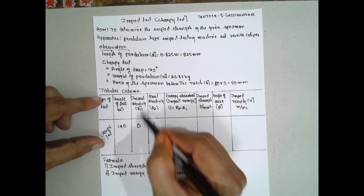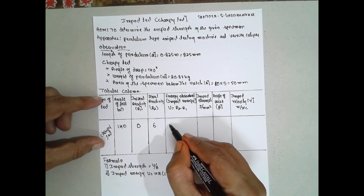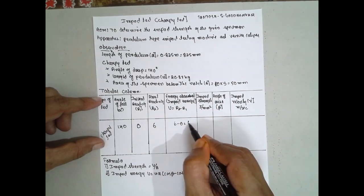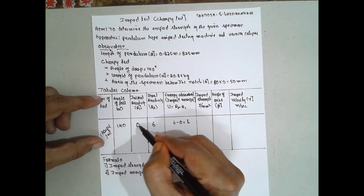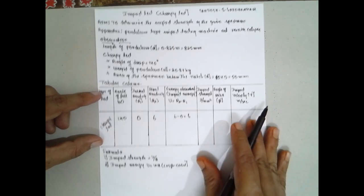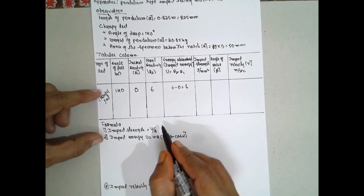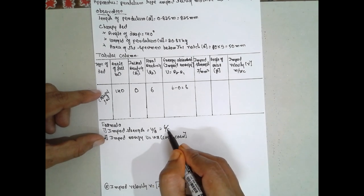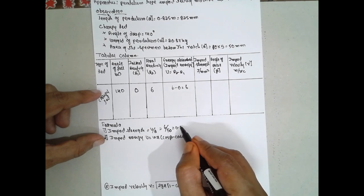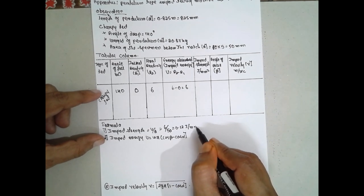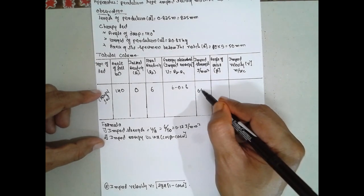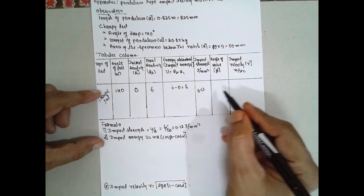Now substitute the values. The energy absorbed U = R2 − R1 = 6 − 0 = 6 joules. Impact strength is calculated as U divided by area: 6 divided by 50 = 0.12 joules per mm².